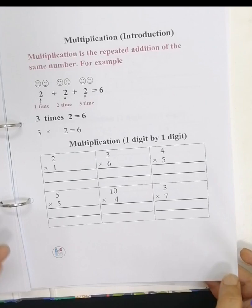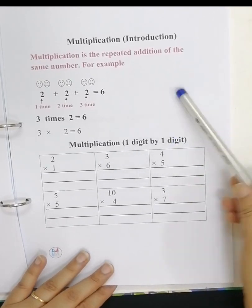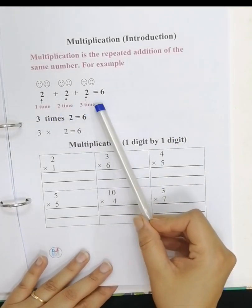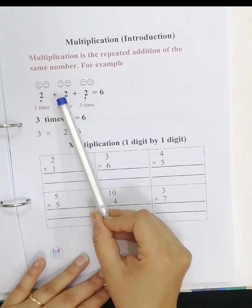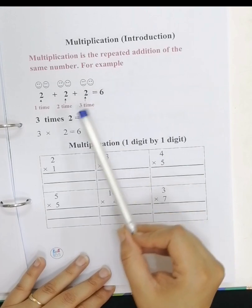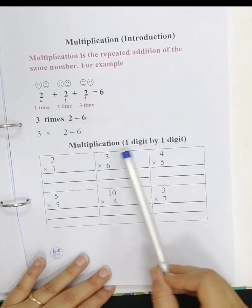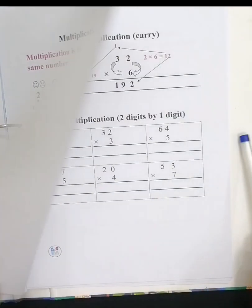Multiplication. Multiplication introduction: multiplication is the repeated addition of same numbers. Let's see, two plus two plus two equals six. And here multiplication one digit by one digit.